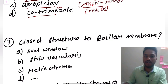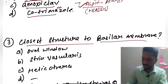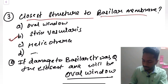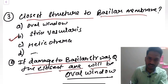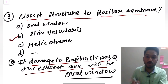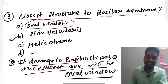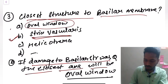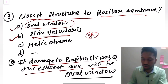The next question is controversial: what is the closest structure to the basilar membrane? If the question simply asks for the closest structure, the answer is stria vascularis. But if the question says the basilar membrane was damaged and asks which closest structure caused the damage, then the answer is oval window. Most people recalled it as just 'closest structure,' so the answer would be stria vascularis.